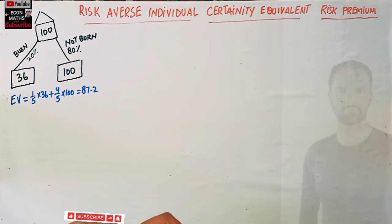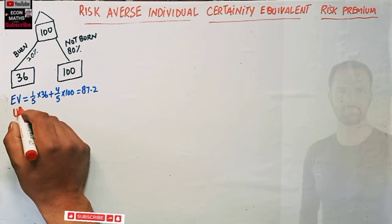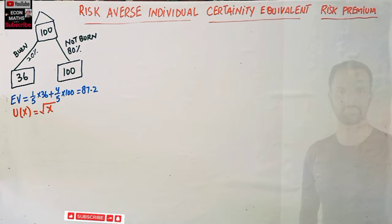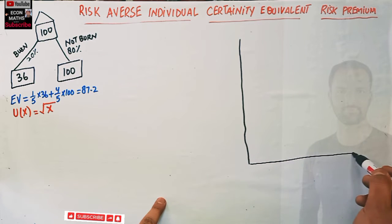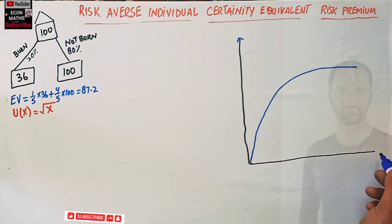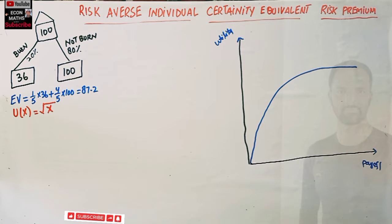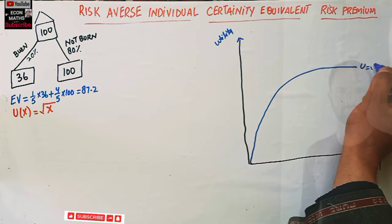Let us have the utility function for this risk averse individual. Let us say this individual faces a utility function: U(x) = √x. Let me draw this on a graph. On the horizontal axis we measure the payoff, and on the vertical axis we measure the utility.